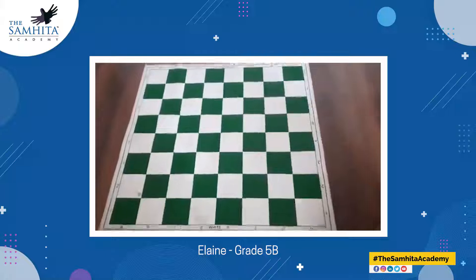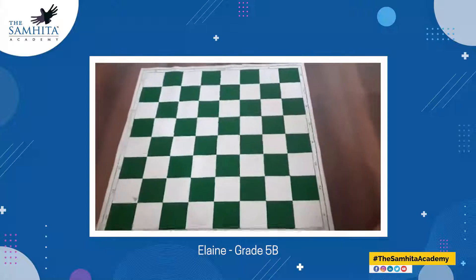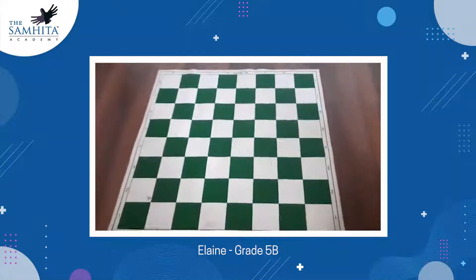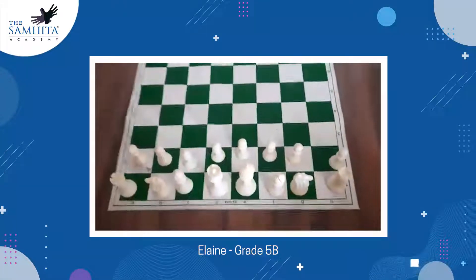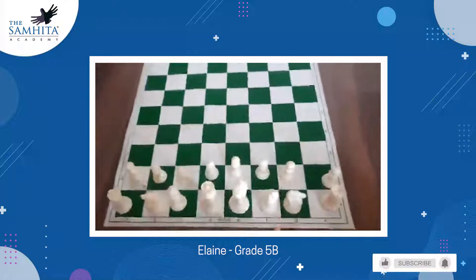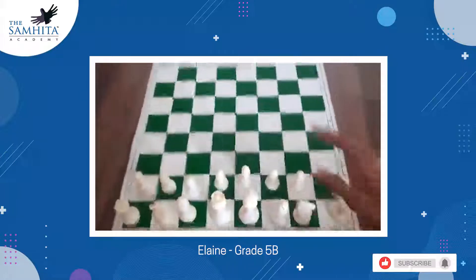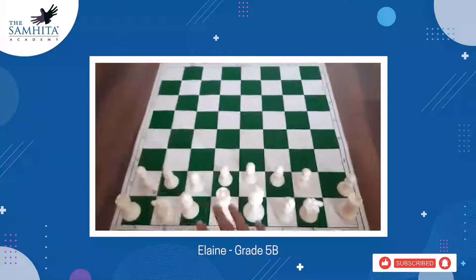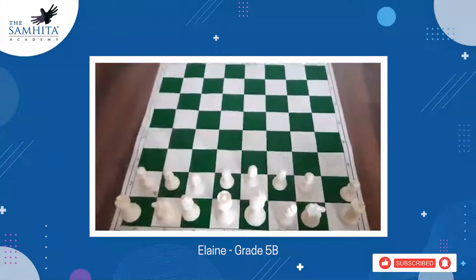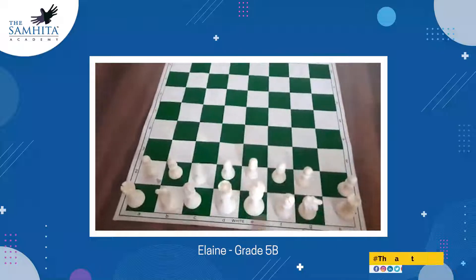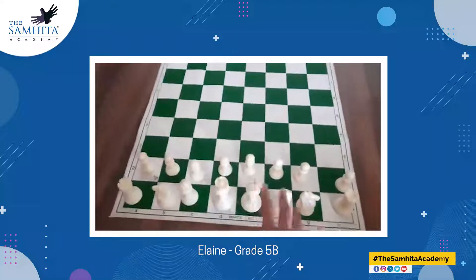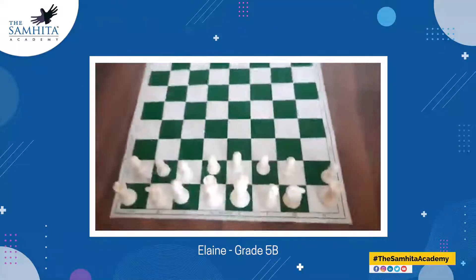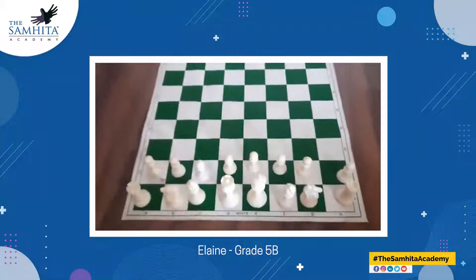Another way chess and maths are related is by piece value. There are 16 pieces per color — 16 for black and 16 for white. There are eight pawns, two rooks, two knights, two bishops, one king, and one queen.